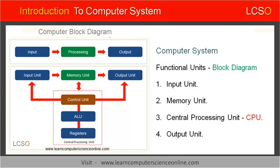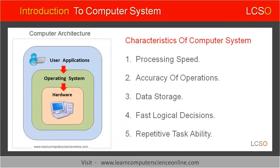So far we have discussed various functional units of the computer. Let us now move on to the next topic: important characteristics of the computer system. The computer system has four important characteristics. These characteristics are: first, speed; second, accuracy; third, storage; fourth, fast decisions; and fifth, ability to perform repeated tasks.